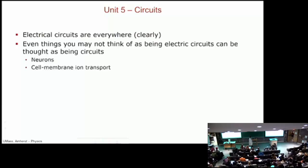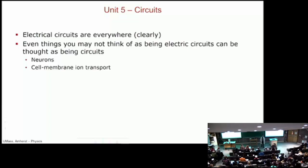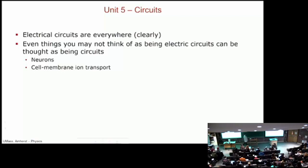Moreover, there's a bunch of stuff that you might not think of as being an electric circuit, but we can analyze using the properties of circuits that we're going to discuss over the course of this unit. We'll be able to draw a rough circuit and think about a neuron as a circuit. Cell membrane ion transport — a cell membrane is essentially a capacitor. So we'll be able to talk a little bit about cell membranes in that context.